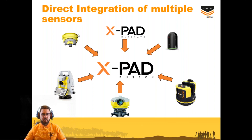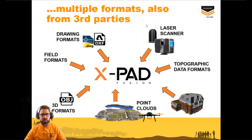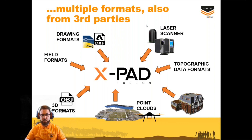We can consider Expert Office Fusion as a platform from which we can integrate data from many sensors, like GNSS, TPS, levels, Zoom 3D hardware, and laser scanners. We can also integrate data from different multi-formats and third-party software — for example, drawing format data, laser scanner data, point clouds, topographic data formats, EFC files, and other 3D formats.